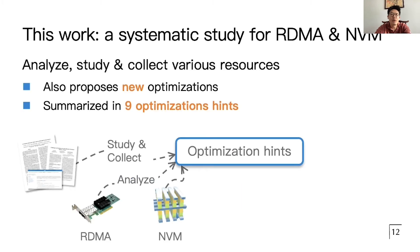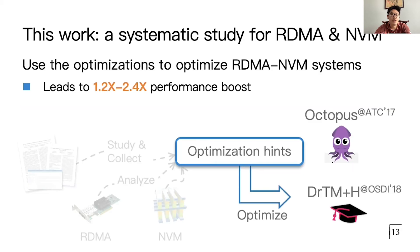In our work, we provide a systematic and comprehensive study on how to best leverage NVM with RDMA. We collect and study various related optimizations from different sources and empirically analyze their impacts on RDMA and NVM systems. We also propose new optimizations. The study summarizes nine optimization hints. Based on these hints, we optimized two existing RDMA and NVM systems — one distributed database and one distributed file system — both designed when no production NVM was available. Our optimized systems can achieve up to two times better performance.